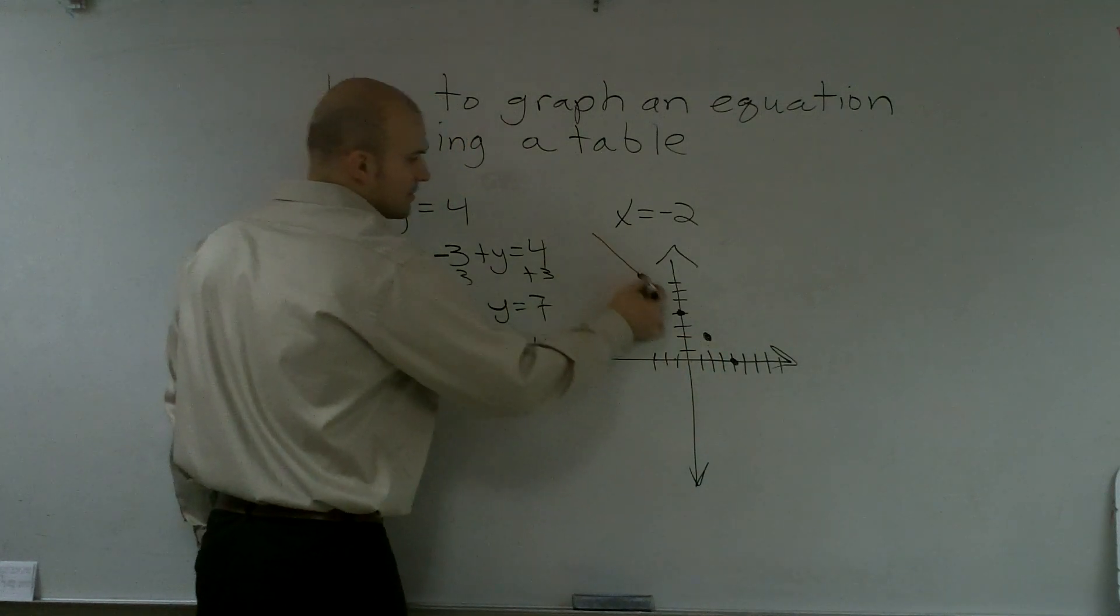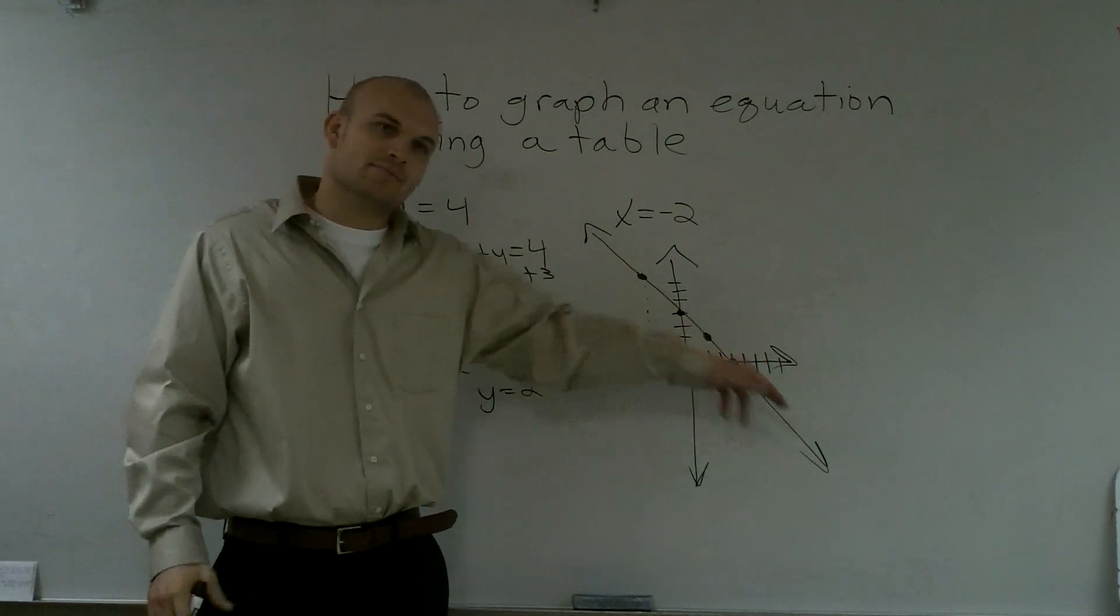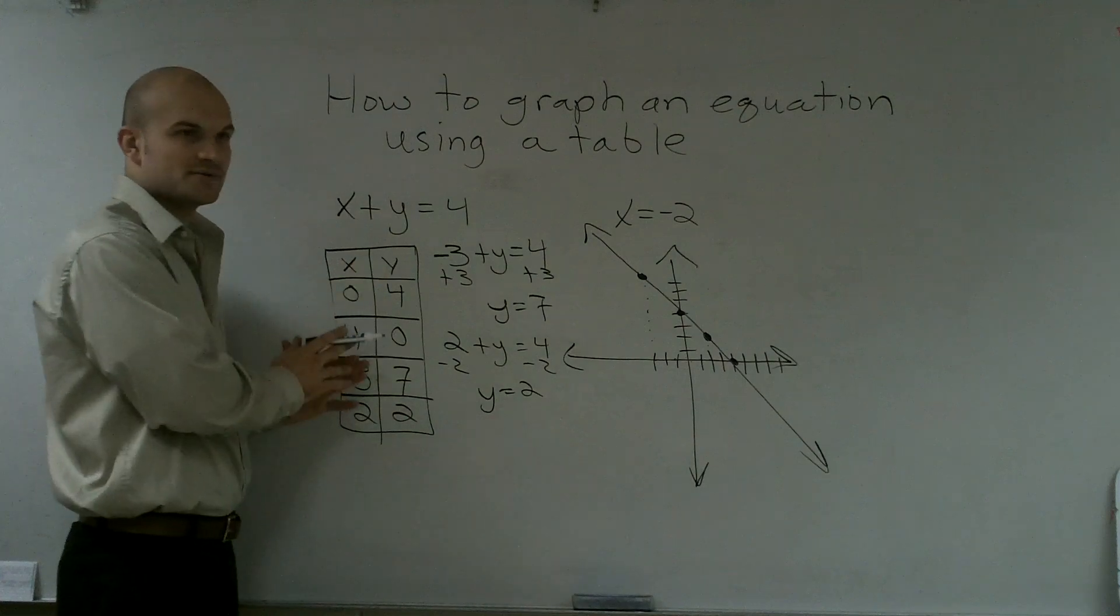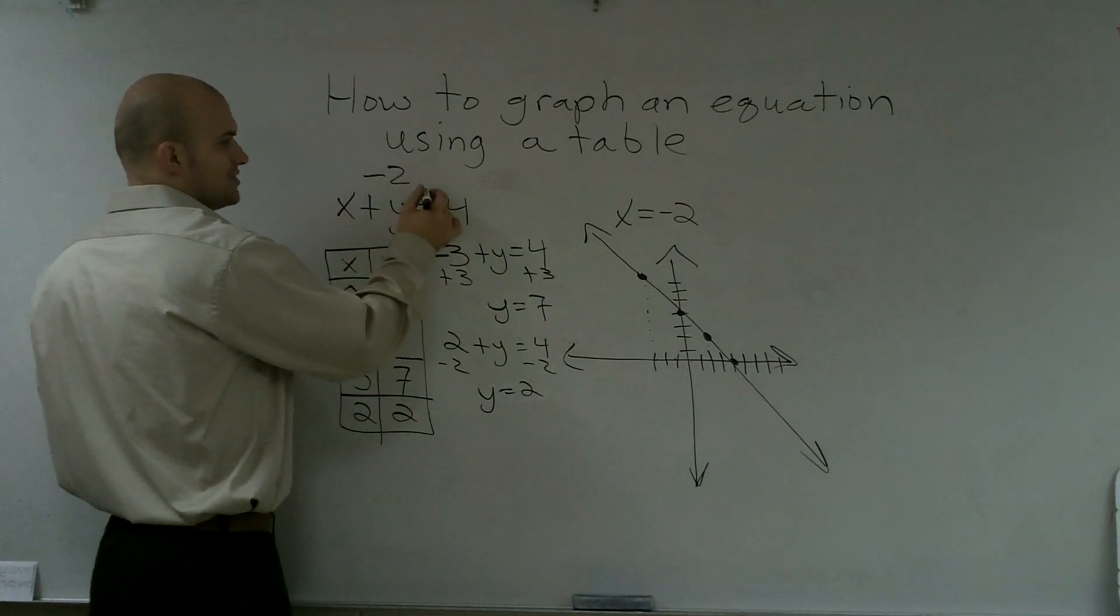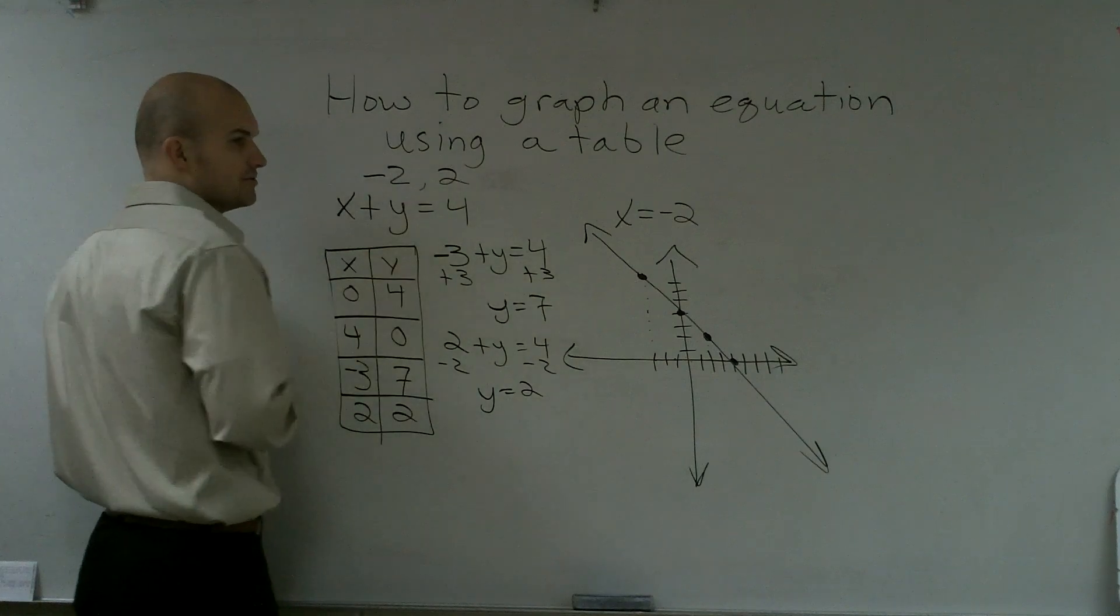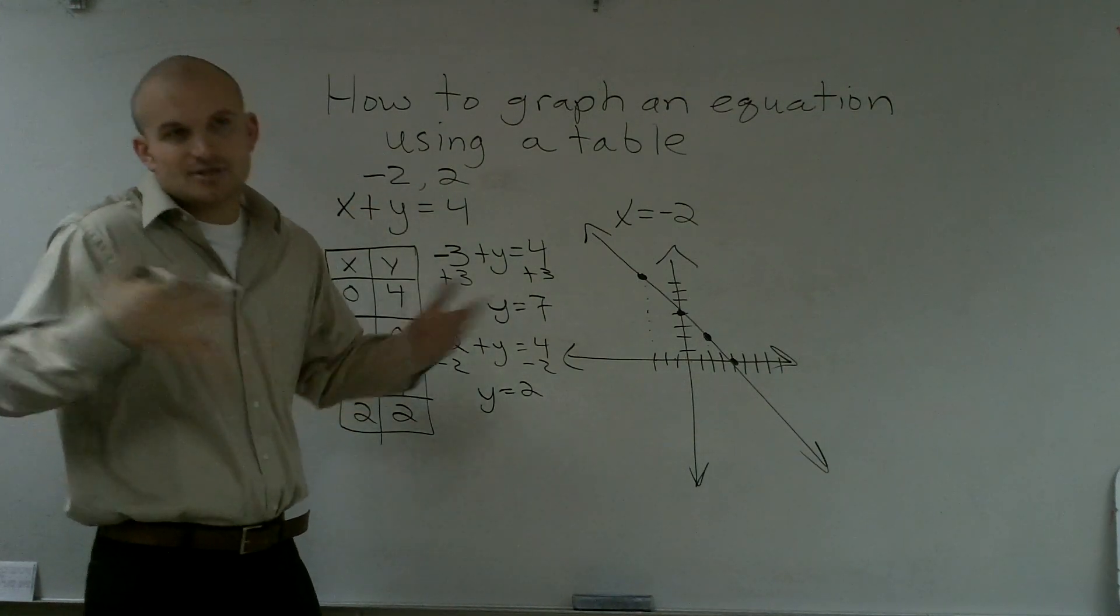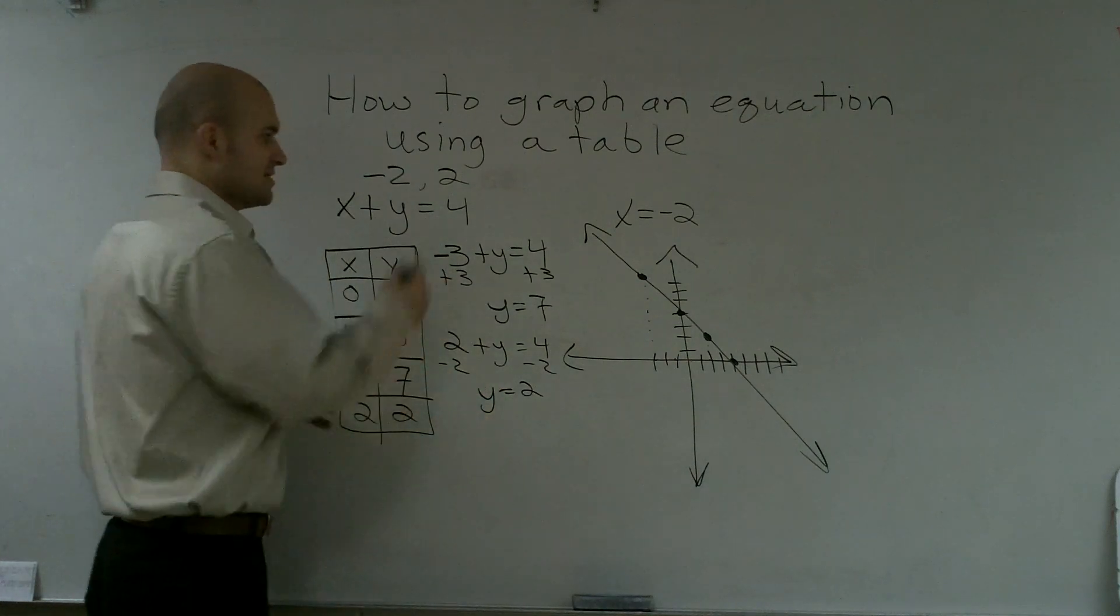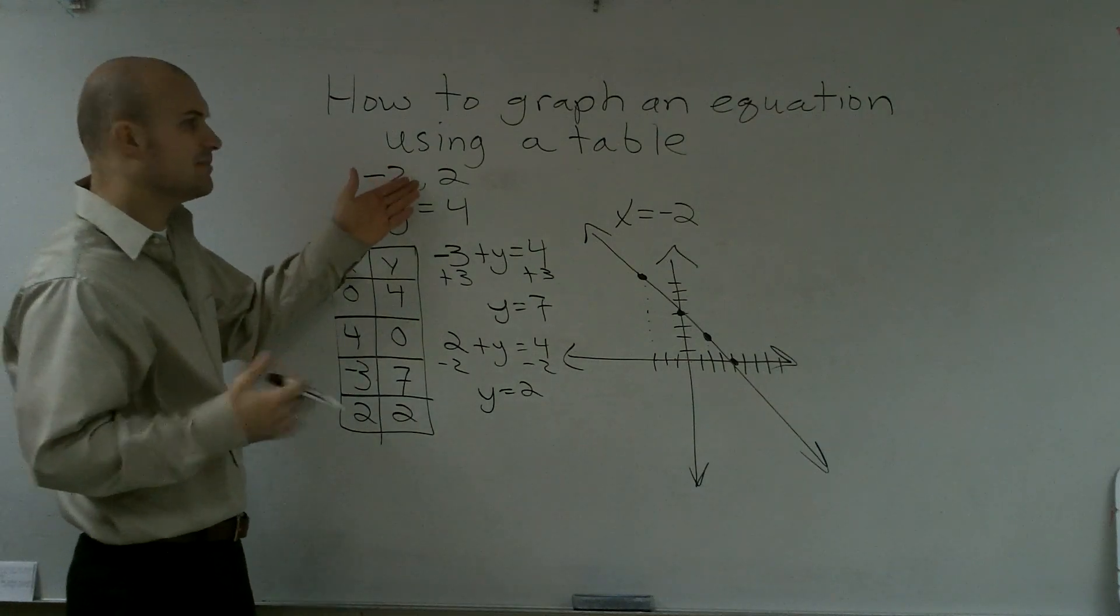And what I notice, ladies and gentlemen, is that my graph or my points are all going to lie in the same line. So when you need to go ahead and find a table, pick values. And the values that I like to pick are usually between negative 2 and positive 2. You obviously don't want to pick fractions unless you actually have a denominator with a fraction, which we'll go over later. But just pick easy numbers.